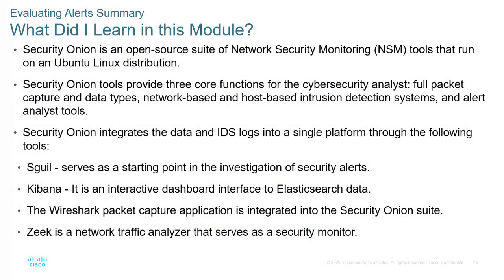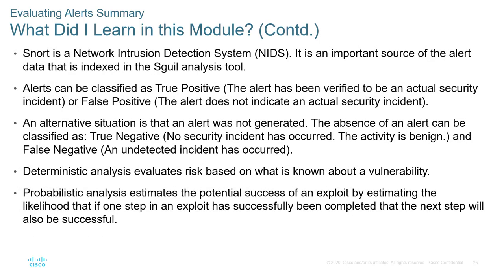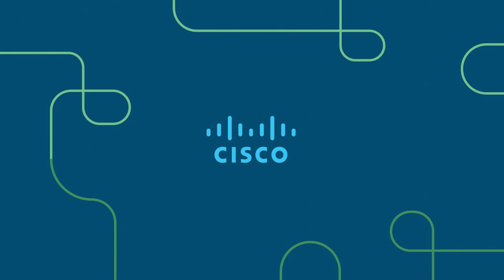That wraps up this module. We looked at analysis tools and the platforms for pulling in data using Security Onion — Sguil, Wireshark, Zeek, Kibana, and Snort. We looked at classifications: true and false positive and negative alerting, as well as alternate situations. We covered both deterministic and probabilistic analysis. Questions or concerns — feel free to reach out. Being able to ask questions and discuss topics in the lecture helps build long-term retention, so do not be afraid to communicate. Thank you.